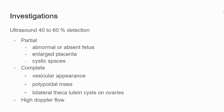With investigations, we're able to pick up about 40 to 60% on ultrasound, and it's easier to pick up a complete mole. With a partial molar pregnancy, there is an abnormal or absent fetus with an enlarged placenta and cystic spaces. With a complete molar pregnancy, there's a more vesicular appearance, a polypoidal mass, and there can be bilateral theca lutein cysts on the ovaries. Both types of pregnancy will have high Doppler flow over the placental area, indicating increased vascularity.